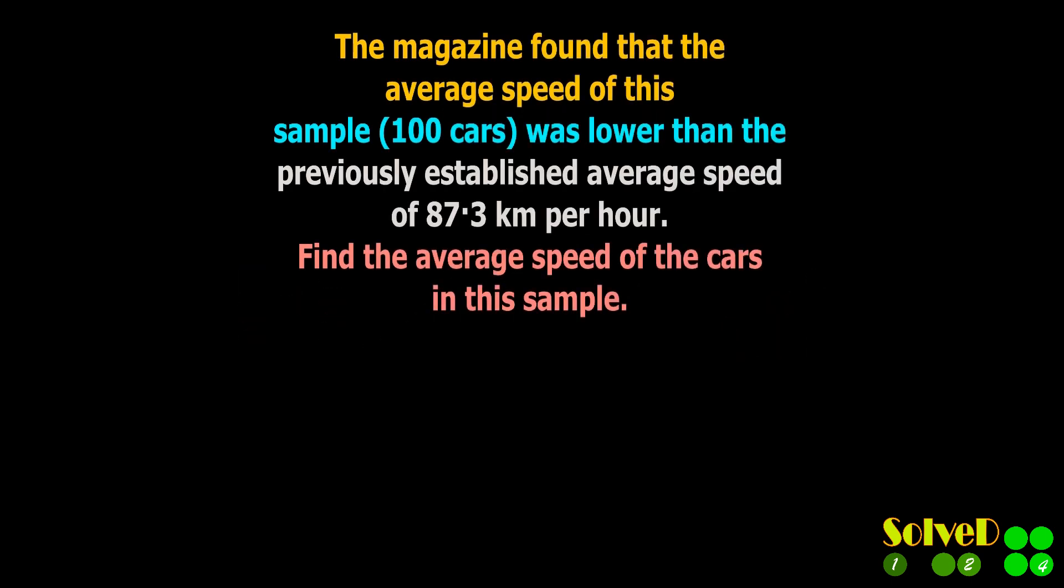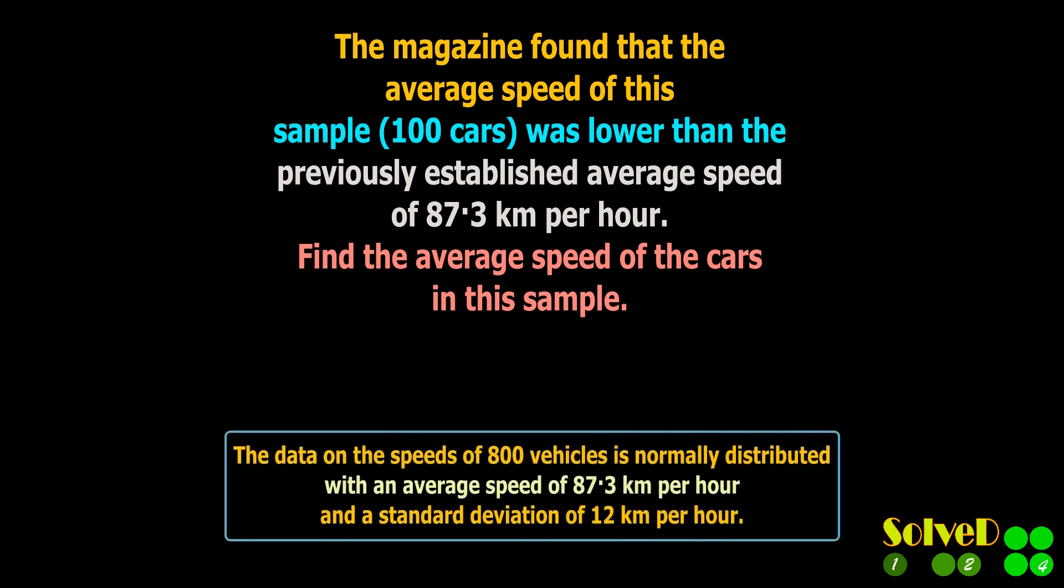Consider the magazine found that the average speed of this sample was lower than the previously established average speed of 87.3 kilometers per hour. Find the average speed of the cars in this sample.